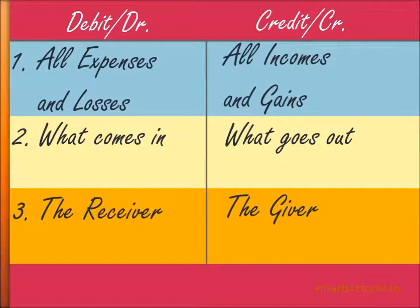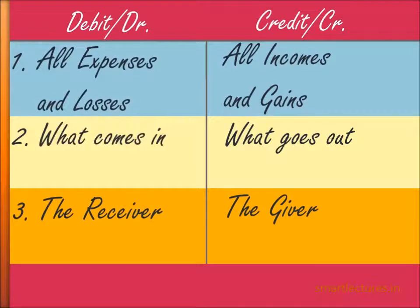Be careful. In the upcoming episodes, we will find out the debit and credit aspect of each transaction and convert it into a journal entry. To find the debit and credit aspect, you cannot disturb the order. You must first apply 'debit all expenses and losses,' then 'what comes in,' and then 'the receiver.'